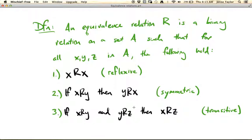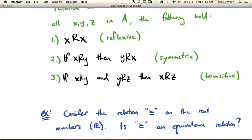So if a binary relation meets these three requirements, then it's called an equivalence relation. So let's just explore this in an example.